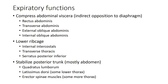Our expiratory muscles can be divided into different expiratory functions. One set compresses the abdominal viscera — the stuff in your abdomen like your intestines and your stomach — working indirectly opposite the diaphragm. Those are the rectus abdominis, the transverse abdominis, the external oblique abdominis, and the internal oblique abdominis. There are muscles that lower the ribcage, primarily by pulling on the lower ribs: the internal intercostals, the transverse thoracis, and the serratus posterior inferior.